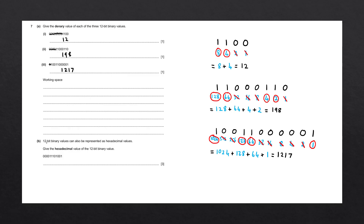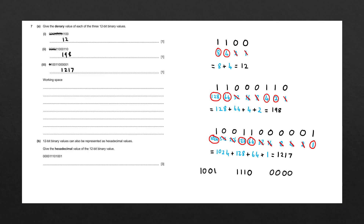Part B: 12-bit binary values can also be represented as hexadecimal values. Give the hexadecimal value of the 12-bit binary value. To convert a binary number into hexadecimal, we start at the least significant bits and count 4 places to the left. The reason we split our binary number into 4-bit sections is because a single hexadecimal digit is equal to 4 binary bits — the word for this is a nibble. We work out the hexadecimal value for each individual nibble.